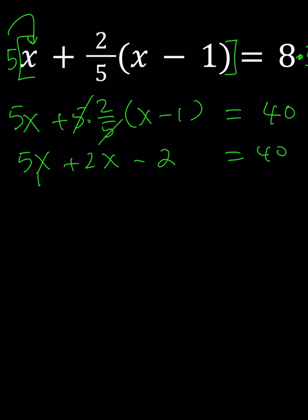Now combine like terms: 5x plus 2x equals 7x minus 2 equals 40. And then we can go ahead and add 2 to both sides. Negative 2 and positive 2 cancel out, leaving us with 7x equals 42.